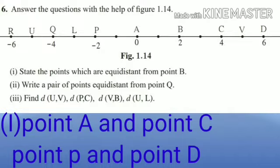Last question of the exercise — question number 6. Answer the following questions with the help of a figure. One line is given to you with points and their coordinates. First question: state the points which are equidistant from point B. See in the figure — from point B, the equidistant points are A on one side and C on the other side. Points P and D are also equidistant from point B. So your answer is: point A and point C, and point P and point D are equidistant from point B.